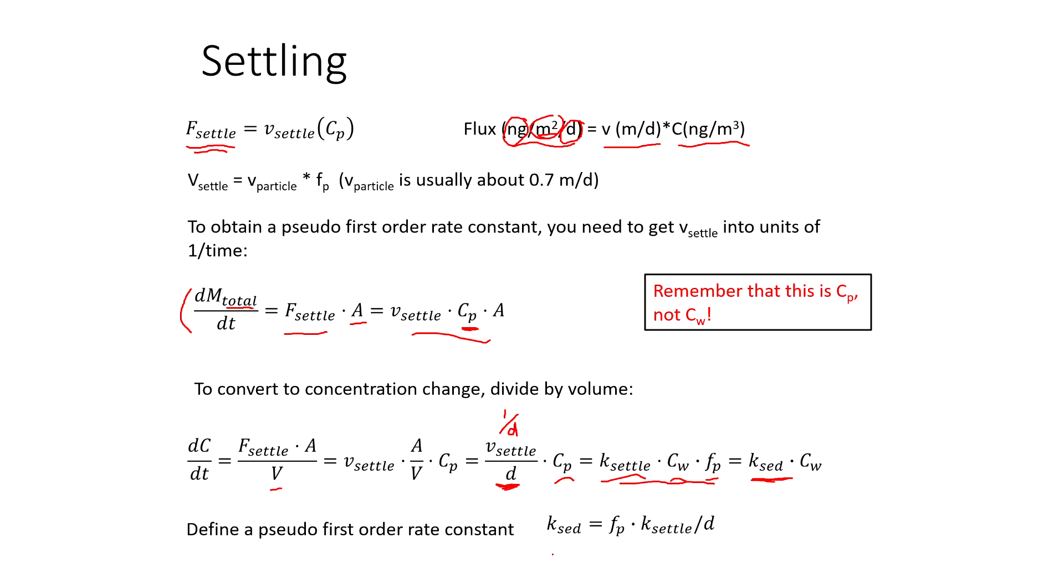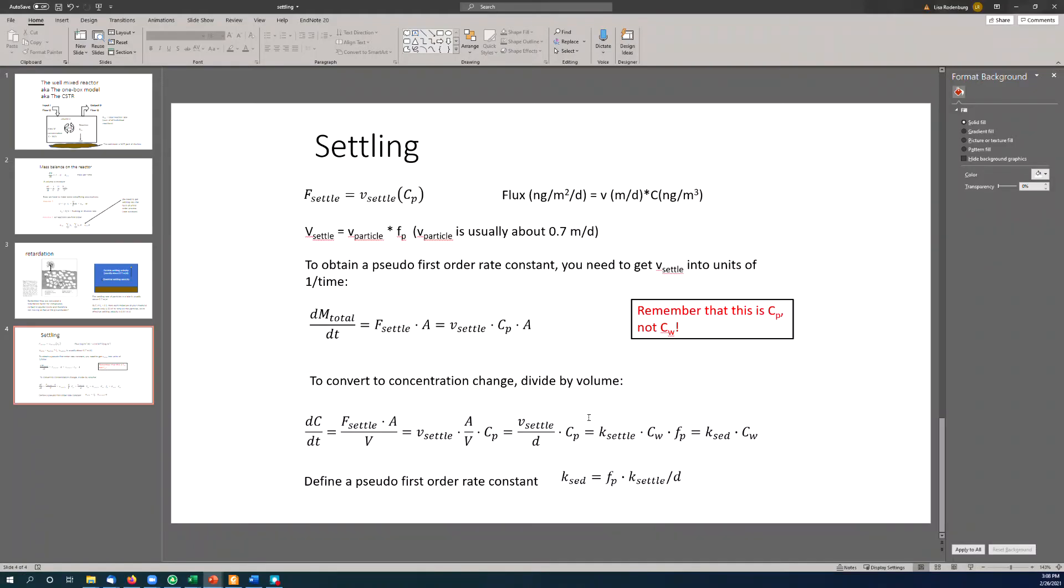So we're defining this new thing that we're calling K_sed, and it's the fraction of the chemical on the particles, F_p, times the settling velocity of the particles, K_settle, divided by the depth of the system. So that's what we're going to do in our example problem here.